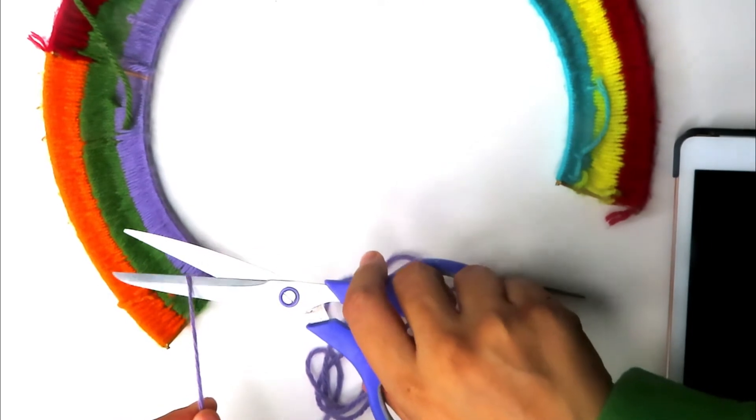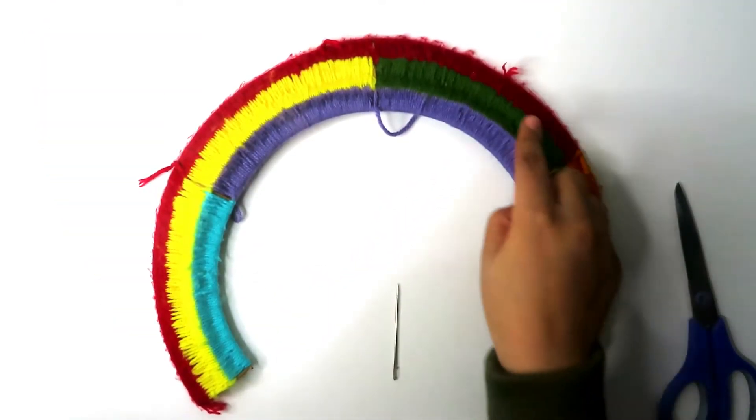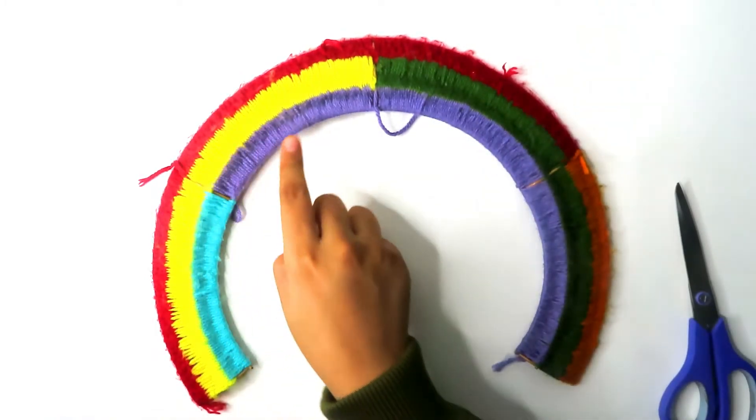Use your scissors to cut the end of the string. Okay, so we're done threading our rainbow and now it's time to clean it up.